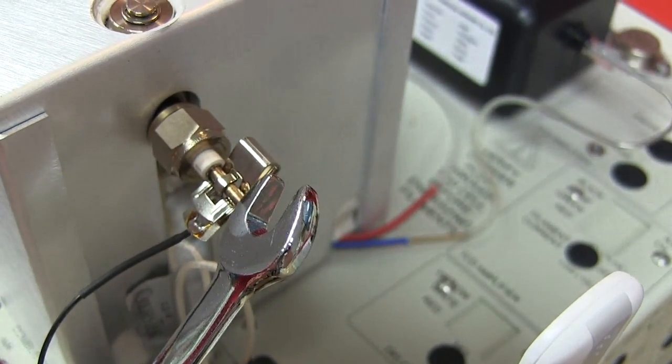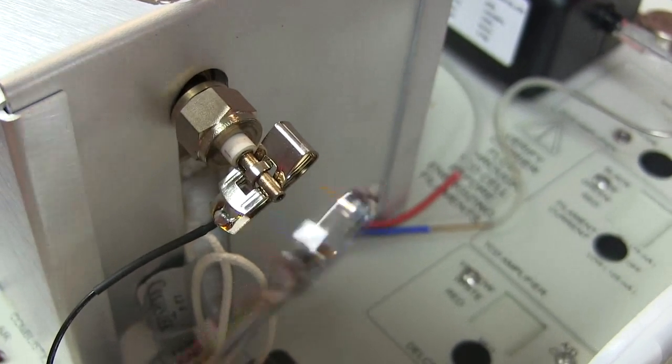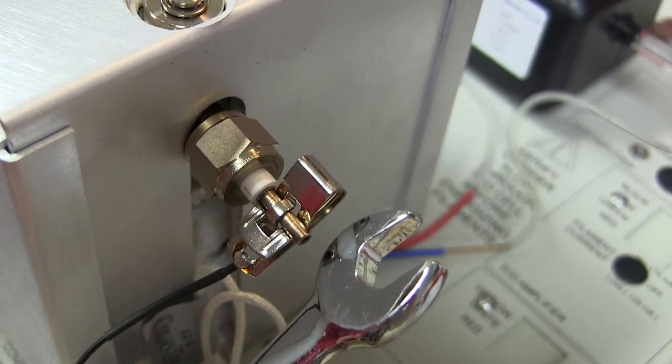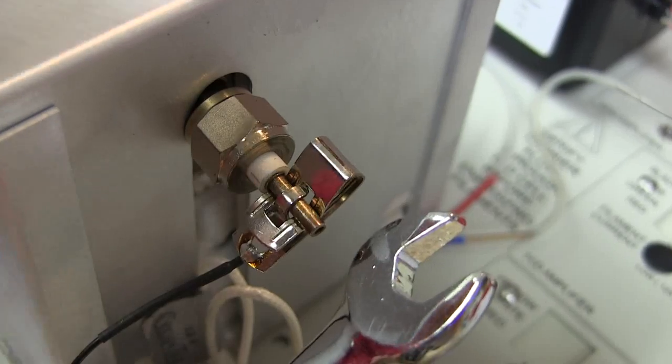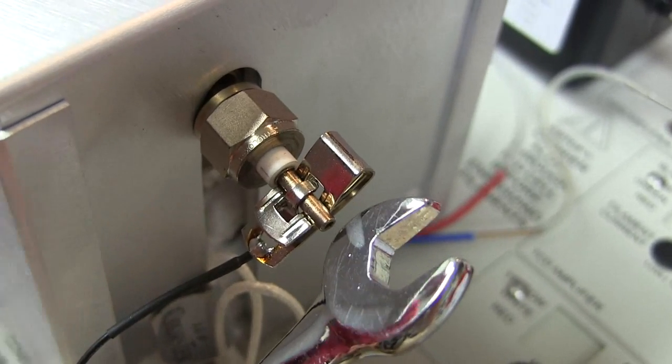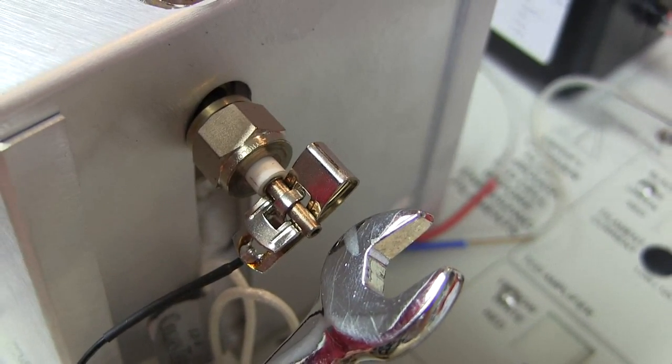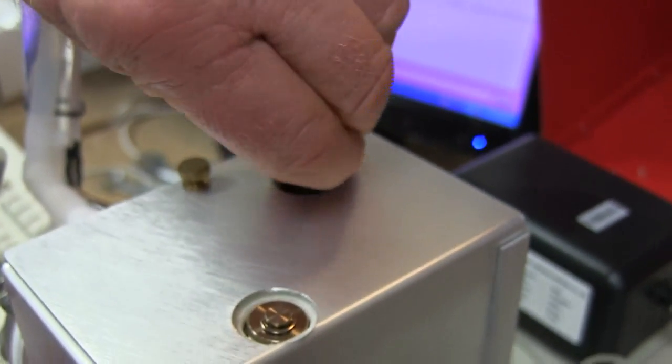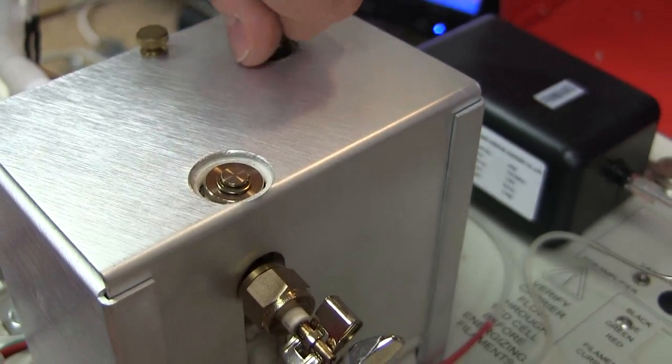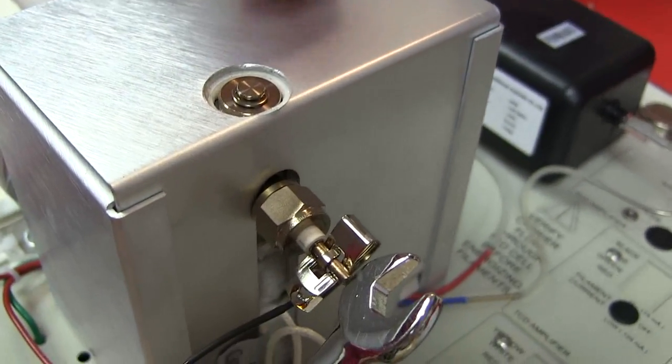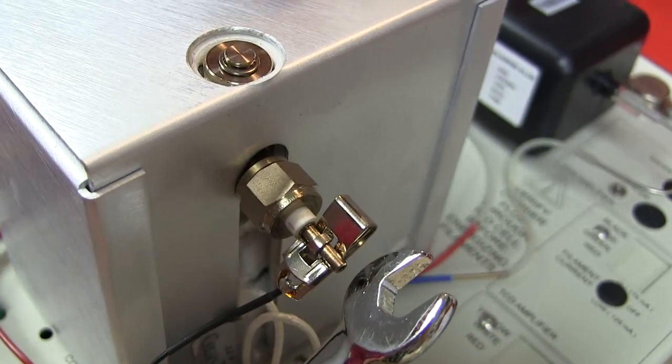If I loosen the septum nut, watch, the flame will go out because all the hydrogen will leak out here instead of going through the column and ending up at the detector. So as soon as I put the septum with the septum nut on and tighten it, you'll see the flame will spring to life and the condensation will reappear.